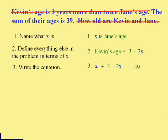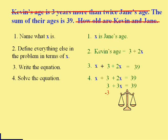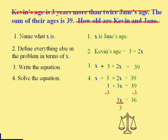I have an equation. Now, let's solve it. Well, I have two x's on the same side, so I'll combine them, and then I'll get the x alone by, in this case, subtracting a three from both sides, and then dividing by three, both sides, and I get x is 12.